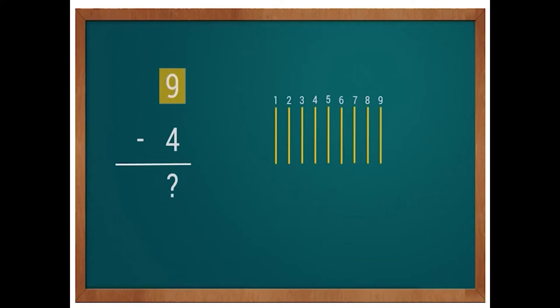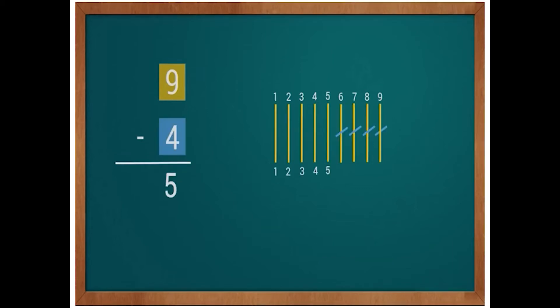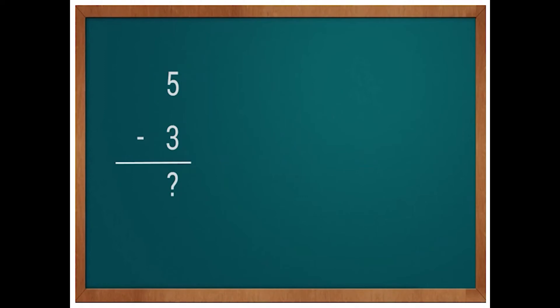Here the first number is nine, so draw nine lines. Now we have to subtract four from nine, so we have to remove four lines from the nine lines. Now how many lines are left? Yes, five lines are left. So nine minus four is equal to five.